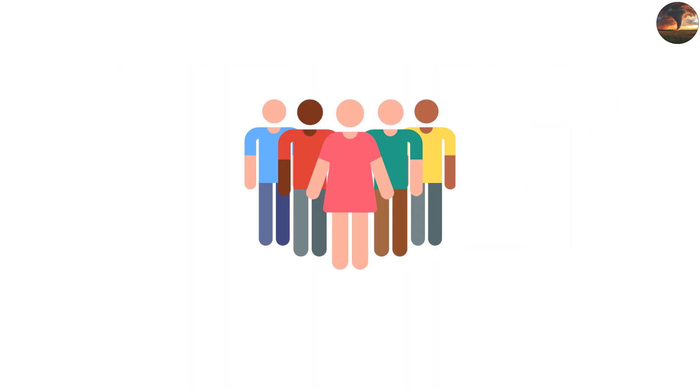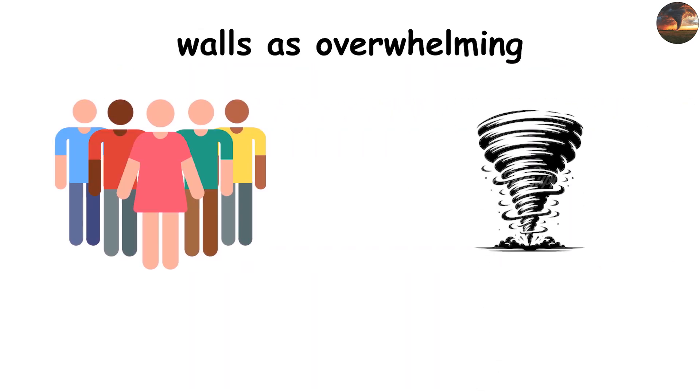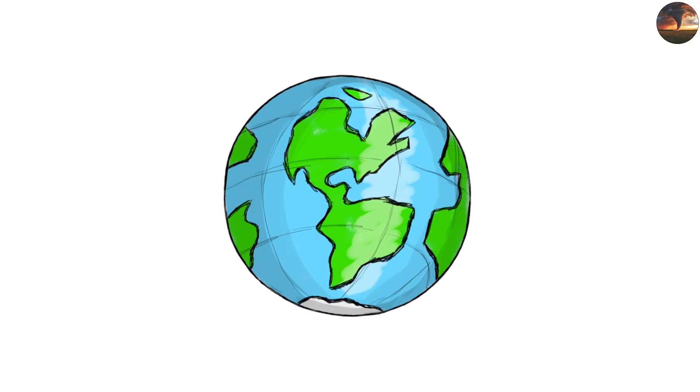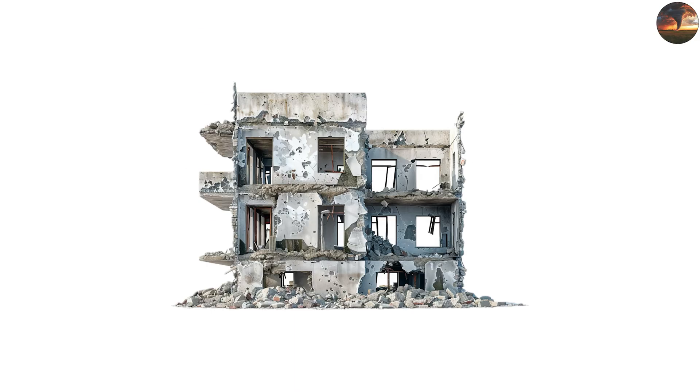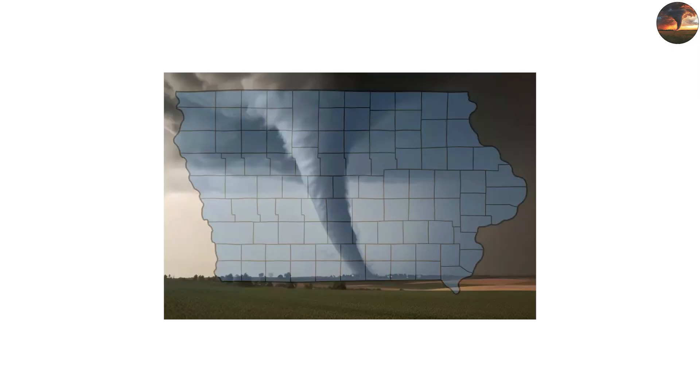Survivors often recall the feeling of the vortex walls as overwhelming, with the world around them literally being torn to pieces in every direction. Even concrete buildings can crumble in this zone, as the wind claws at every surface and pulls apart anything it can grip. The vortex walls aren't just the heart of the tornado, they're the place where nature demonstrates its absolute unstoppable power.